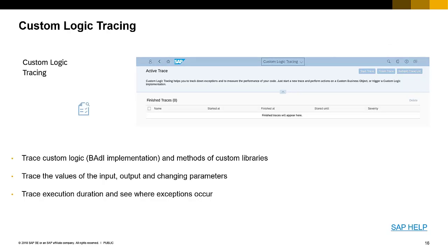Custom logic tracing allows you to debug your code. You can trace the values of your inputs, outputs, and change parameters, and see where exceptions may occur within your code.